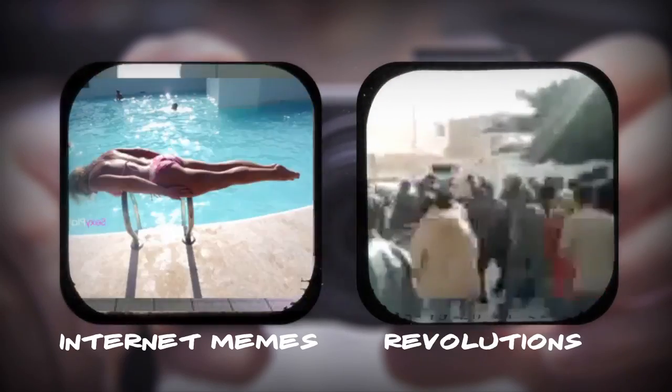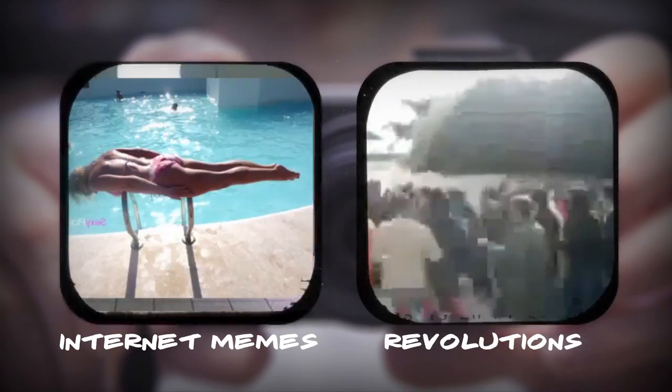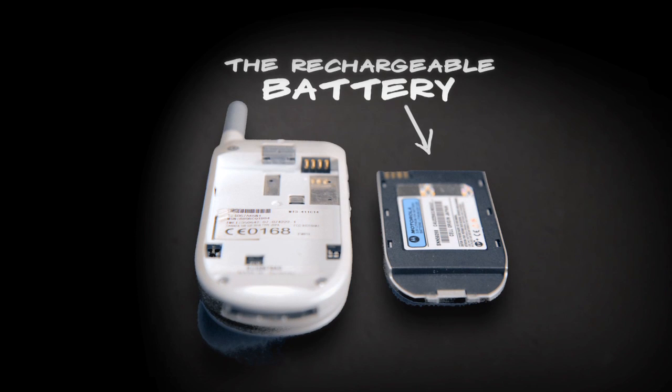There are many different types of batteries, but they all pretty much work the same. Let's look at a cell phone battery. Now to understand how a rechargeable battery works, you need to know a little background.